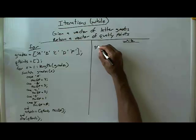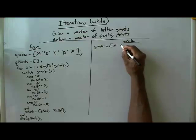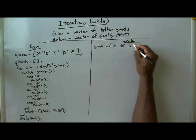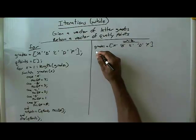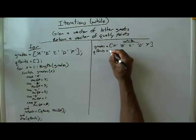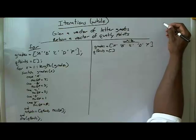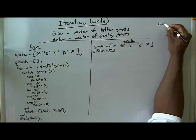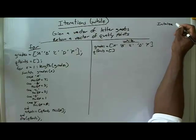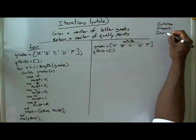So this part's the same: grades equals A, B, C, D, F. And QPoints equals empty. Now before we enter our iteration, let's note it again. With the while loop, we have to initialize, inspect, and increment.